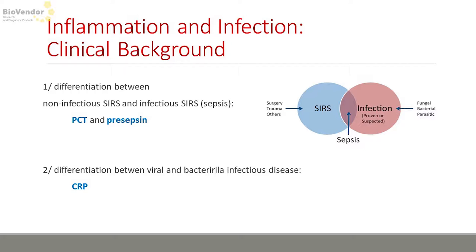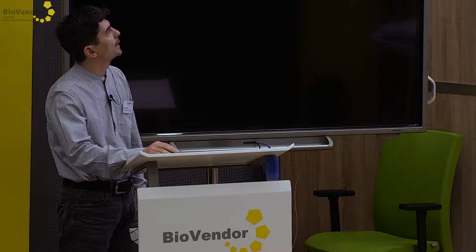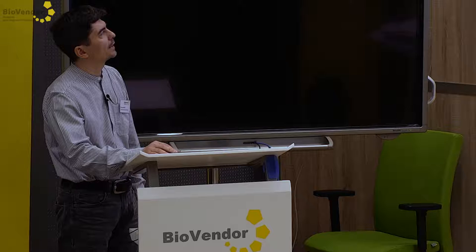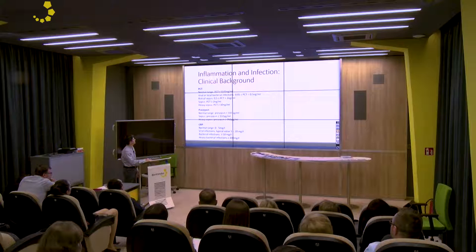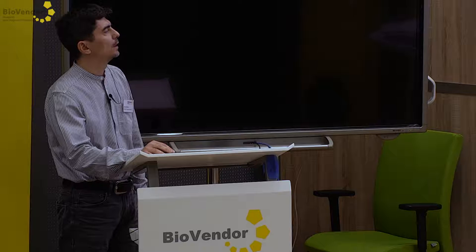The second topic is differential diagnosis between viral and bacterial infection in patients with upper respiratory tract infections, where CRP is used as a common laboratory parameter. Expected cutoff values: for procalcitonin it is 2 nanogram per ml, for presepsin it is 337 picogram per ml, and for CRP, normal values are between 0 and 5 milligram per liter. In patients with viral infection, typical values are between 5 and 20 milligram per liter, and for bacterial infection, typical values are over 50 milligram per liter.